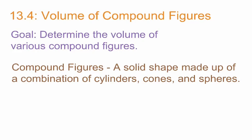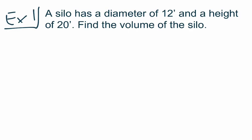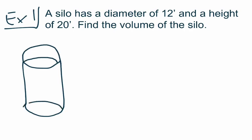Our first example says that a silo has a diameter of 12 feet and a height of 20 feet. Find the volume of the silo. If you've never been to a farm and don't know what a silo looks like, a silo is essentially a cylinder with a hemisphere on top of it. We've got our cylinder here, and on top of that cylinder is going to be the hemisphere. We're told there is an overall height of 20 feet and a diameter of 12 feet.